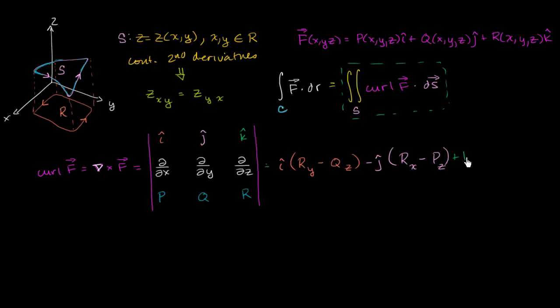And then finally, plus k, plus k, and that's going to be times the partial of x with, or sorry, the partial of q with respect to x, partial of q with respect to x, minus the partial of p with respect to y. Minus the partial of p with respect to y. So we figured out the curl of f, and I'll leave you there.